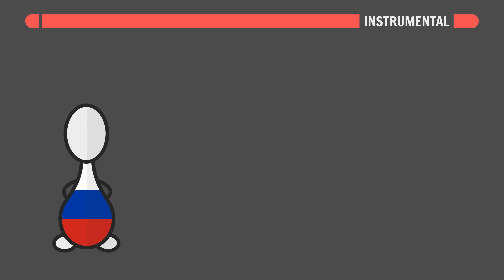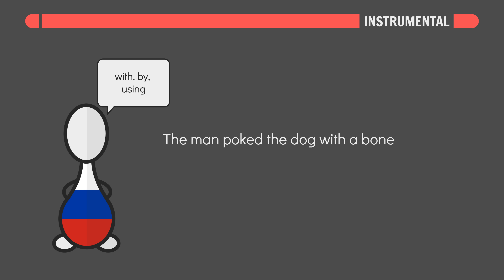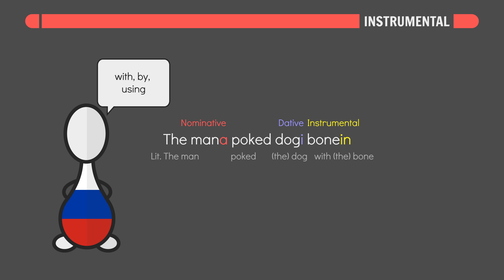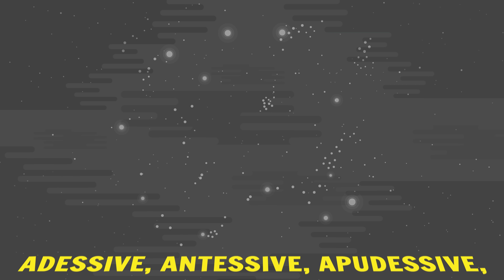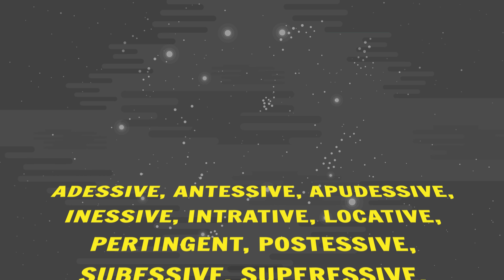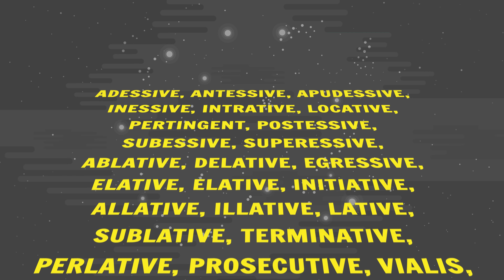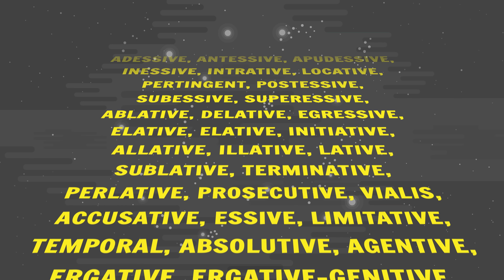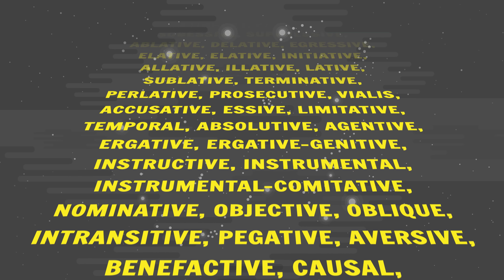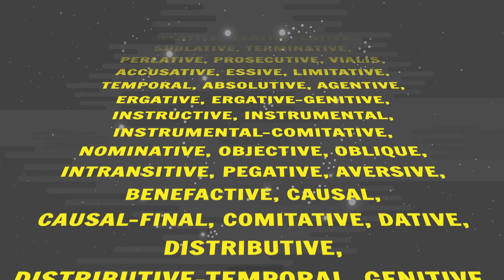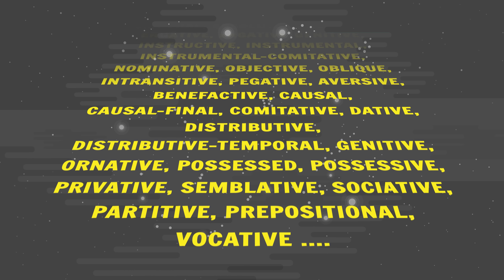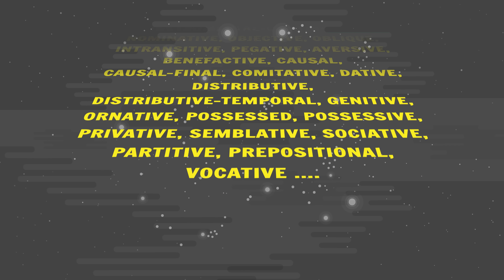Russian's instrumental case marks the means by which a subject does a thing — think 'with,' 'by,' or 'using.' So 'the man poked the dog with a bone' becomes 'the man poked dog-the bone-in.' And there's a whole ton more — links in the doobly-doo. But TLDR: noun cases bake functionality and/or prepositions onto nouns. The upshot is free word order and compactness.